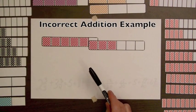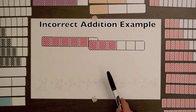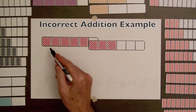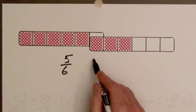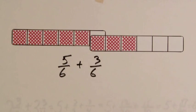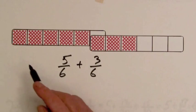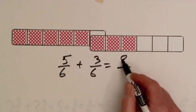A teacher once showed me the following incorrect example of how some students were using the bars to add fractions. They know this is five-sixths, and they know this is three-sixths. And they're putting the bars end to end to show addition. And then they're counting one, two, three, four, five, six, seven, eight. They're getting eight shaded parts.